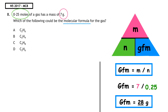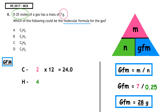The molecular formula must correspond to a GFM of 28 grams. The multiple choice answers all contain carbon and hydrogen. Going through to find the correct answer — which is B — we check: carbon — 2 × 12 = 24; hydrogen — 4 × 1 = 4. Adding these gives a GFM of 28 grams, confirming the answer is C₂H₄.